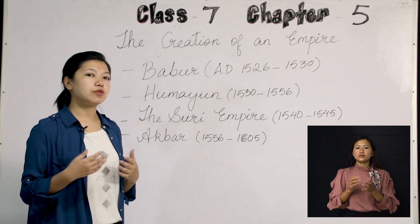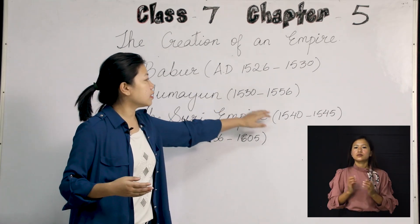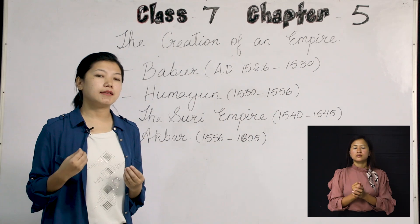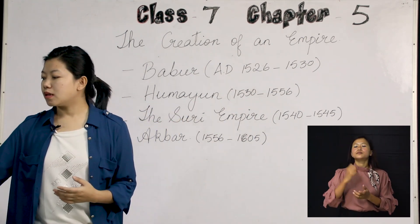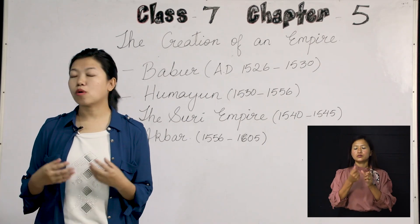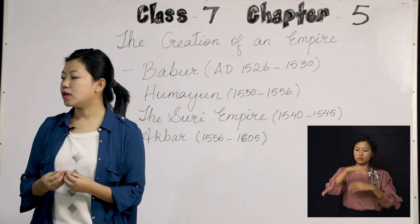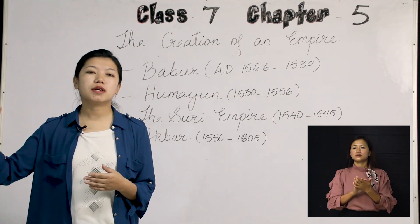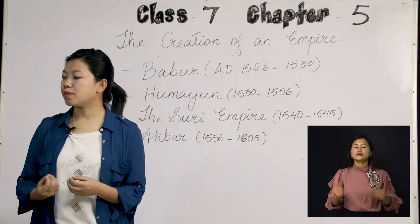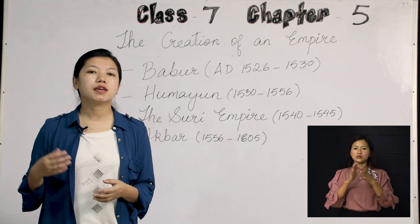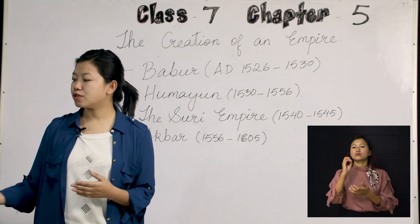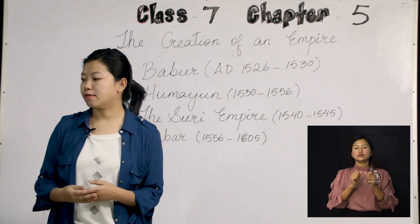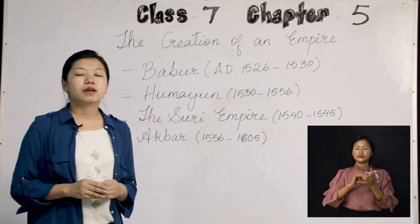Sher Shah Suri came to power and ruled for 15 years, between 1540 to 1545 AD, and then Humayun took control of the Mughal Empire again. Humayun got all his empire back during the Battle of Sirhind. Sher Shah Suri had earlier defeated Humayun in the Battle of Chosa and the Battle of Kannauj and taken back all the Mughal Empire, but at the Battle of Sirhind, Humayun was able to defeat Sher Shah Suri and took control of all the Mughal Empire once again.